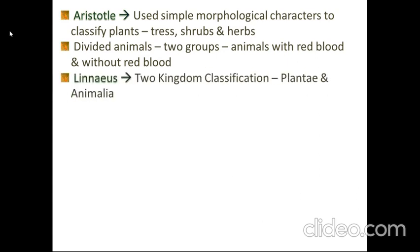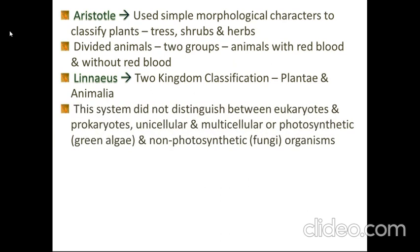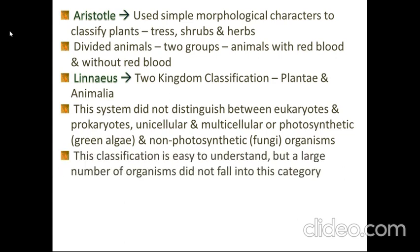Then Carolus Linnaeus introduced two kingdom classification: Plantae and Animalia. This system did not distinguish between eukaryotes and prokaryotes, unicellular and multicellular, or photosynthetic like green algae and non-photosynthetic like fungi. This classification is easy to understand, but a large number of organisms did not fall into this category.